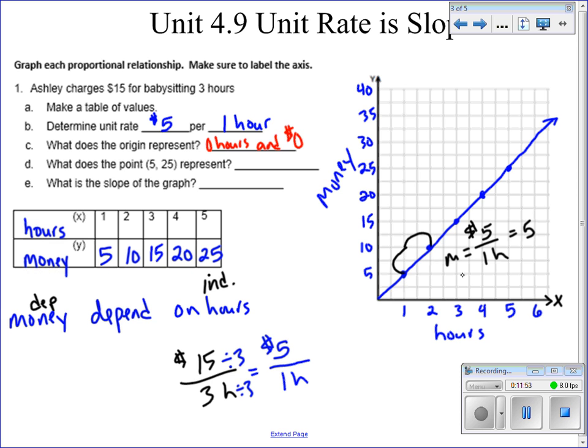Unit rate is slope. This is what our unit rate was, $5 per hour. That's the increase. That's the rate at which this line is increasing. It will always increase because it's linear.